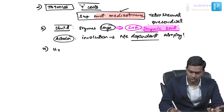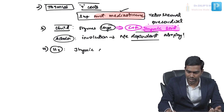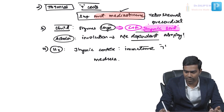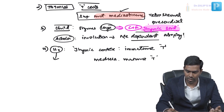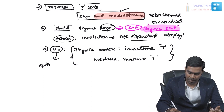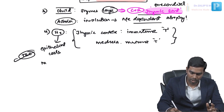On histology or biopsy, the thymus shows a thymic cortex containing immature T cells and a thymic medulla containing mature T cells. The thymus also contains thymic epithelial cells (TECs), which are distinct from thymocytes (thymic lymphocytes). It also contains thymic macrophages and dendritic cells, all important for T cell education.